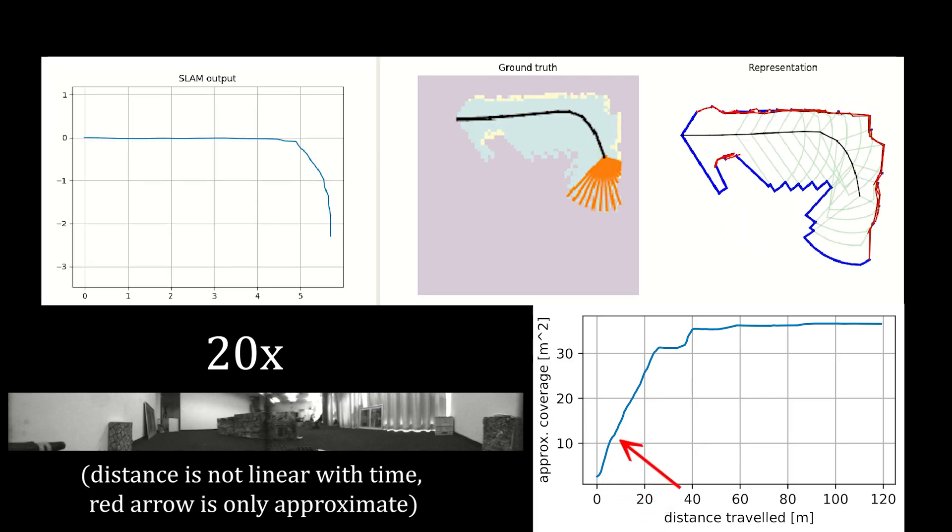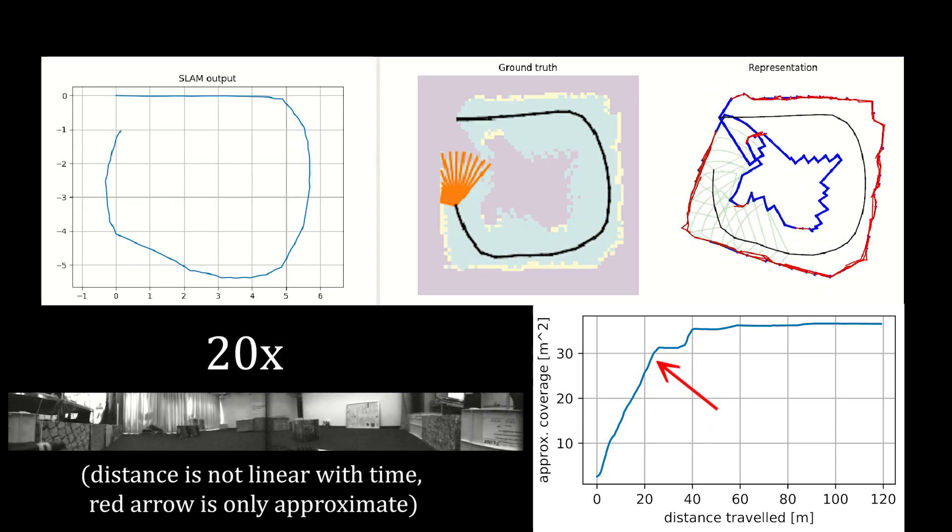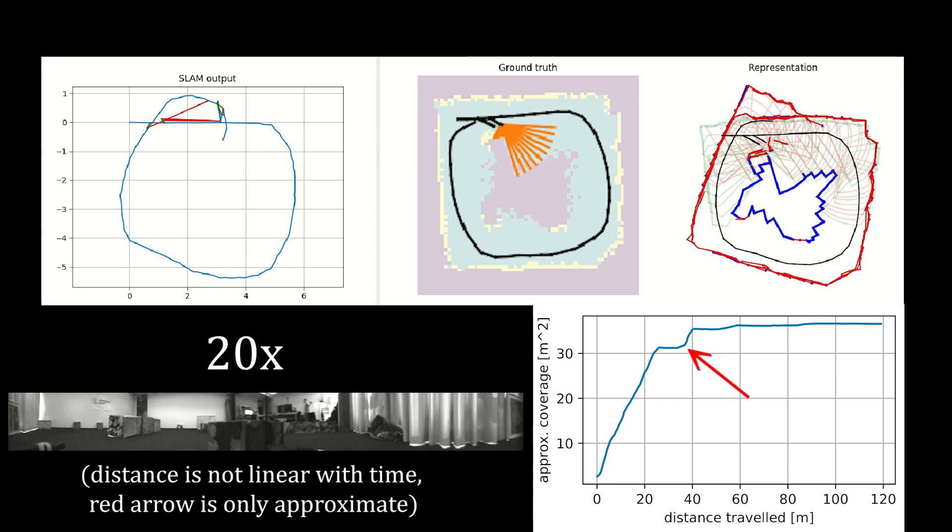As we can see, the real-world experiment validates that our method works not only in simulation. The robot covers the full environment, even though its odometry exhibits pretty strong drift.